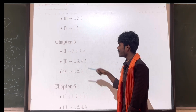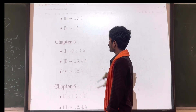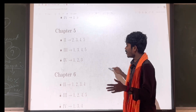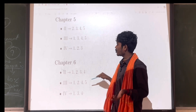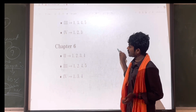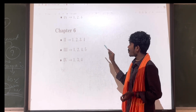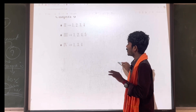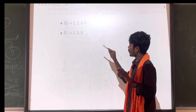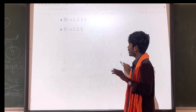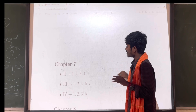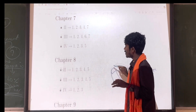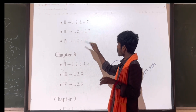Chapter 5: 2 mark questions — 1, 3, 4, 5. Chapter 6: 2 mark questions — 1, 2, 3, 4, 5. 5 mark questions — 1, 3, 4. Chapter 7: 2 mark questions — 1, 2, 3, 4, 7.